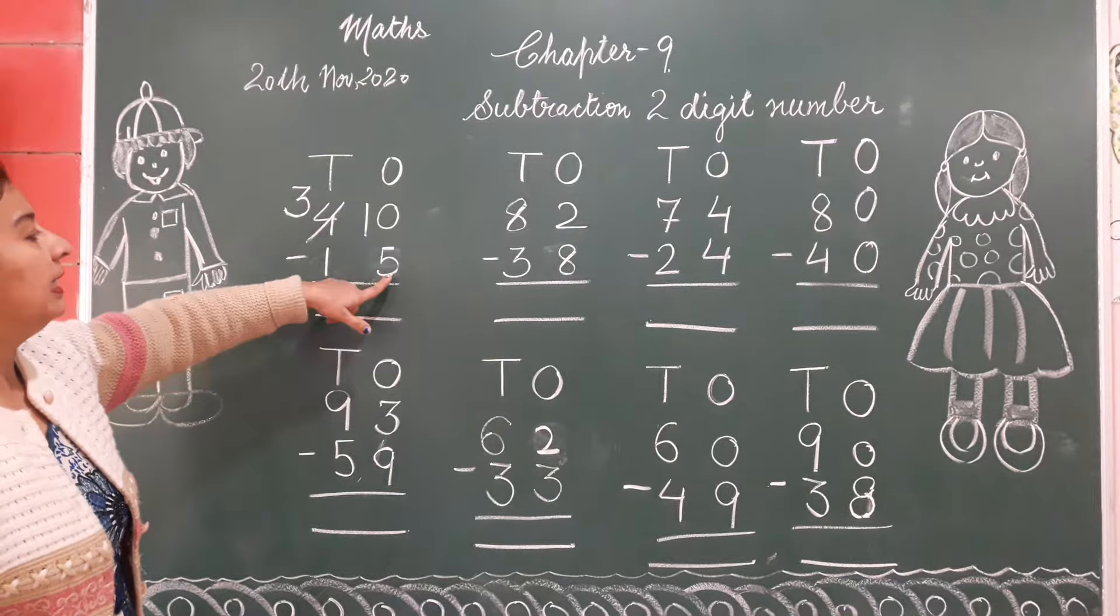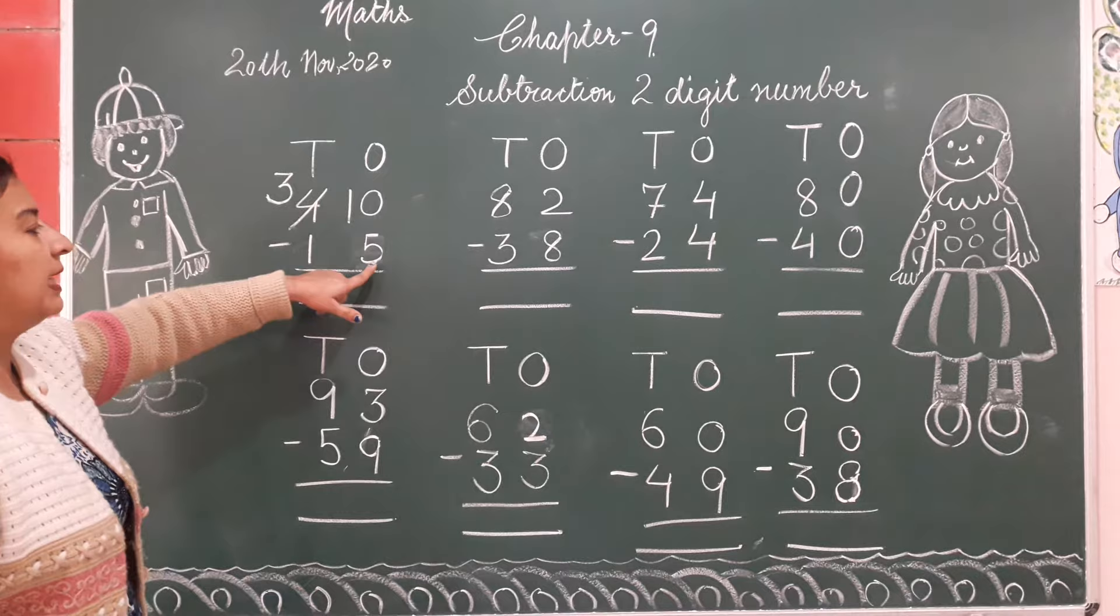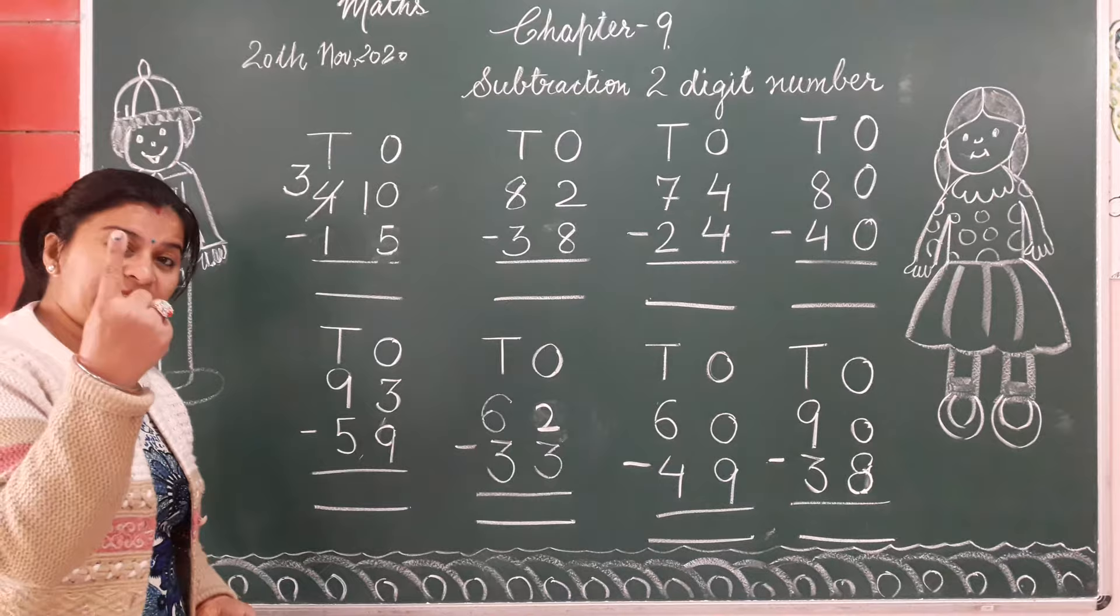Now let's do minus. Here upper number is 10, down number is 5. Let's start counting after 5 up to 10.